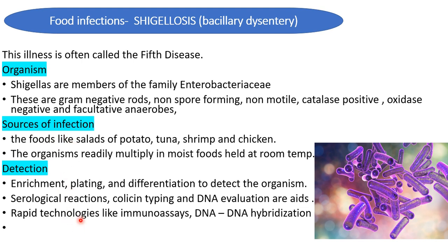Detection of Shigella involves enrichment, plating, and differentiation to detect the organism. Serological reactions, colicin typing, and DNA evaluation are used to further differentiate Shigella species. Rapid technologies including immunoassays that detect virulence marker antigens and PCR to detect virulence plasmids by DNA-DNA hybridization have also been applied to identify Shigella.